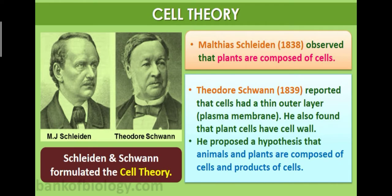Now let's discuss cell theory. M.J. Schleiden and Theodore Schwann are the two scientists who formulated the cell theory. Schleiden, in 1838, observed that plants are composed of cells. He was the scientist who discovered that every living organism is made up of cells — specifically, he observed that plants are composed of cells.